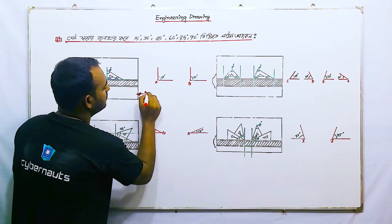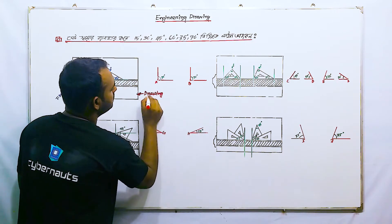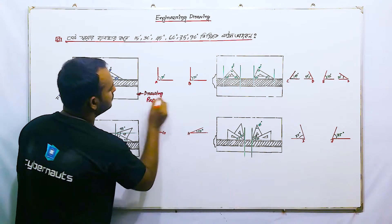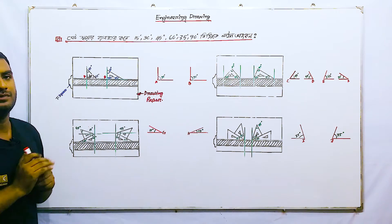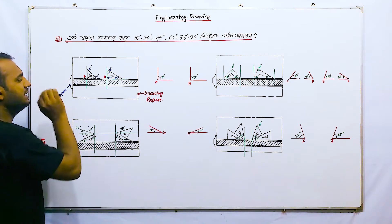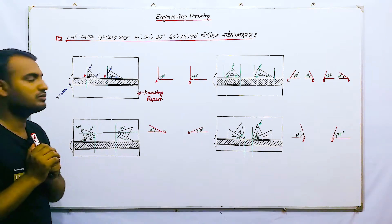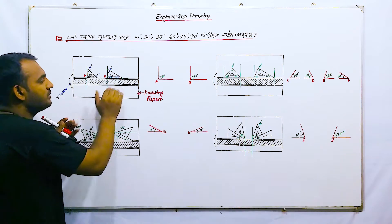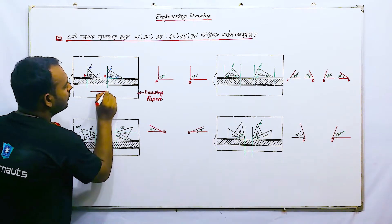This is drawing paper. Drawing paper is on top of our T-square. T-square is on top of our drawing board — it is a straight line drop.